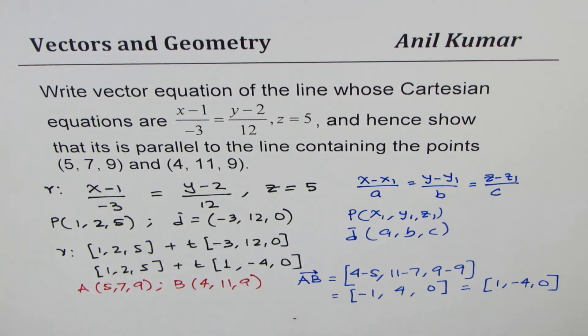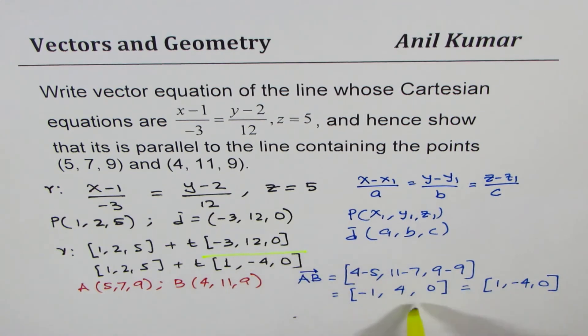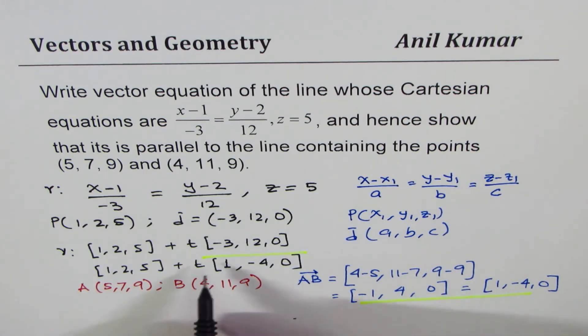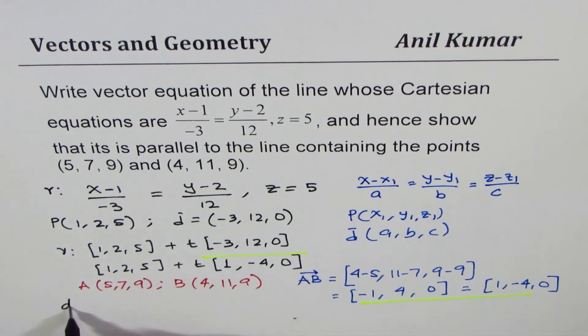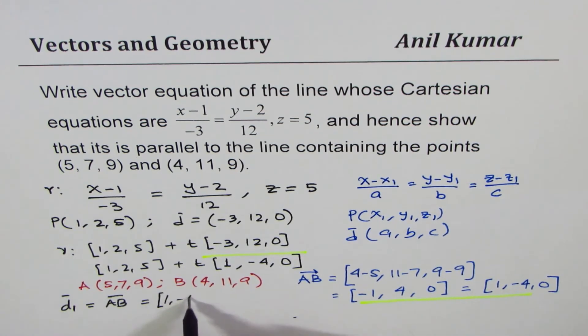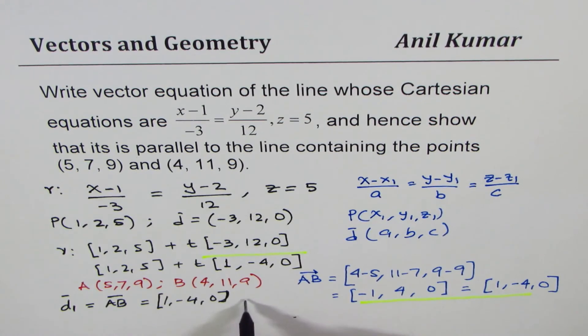So what we notice here is that the direction for both is same. Since the direction vector for the line equals that of the line joining A and B, which is both equals to (1, -4, 0), they are parallel.